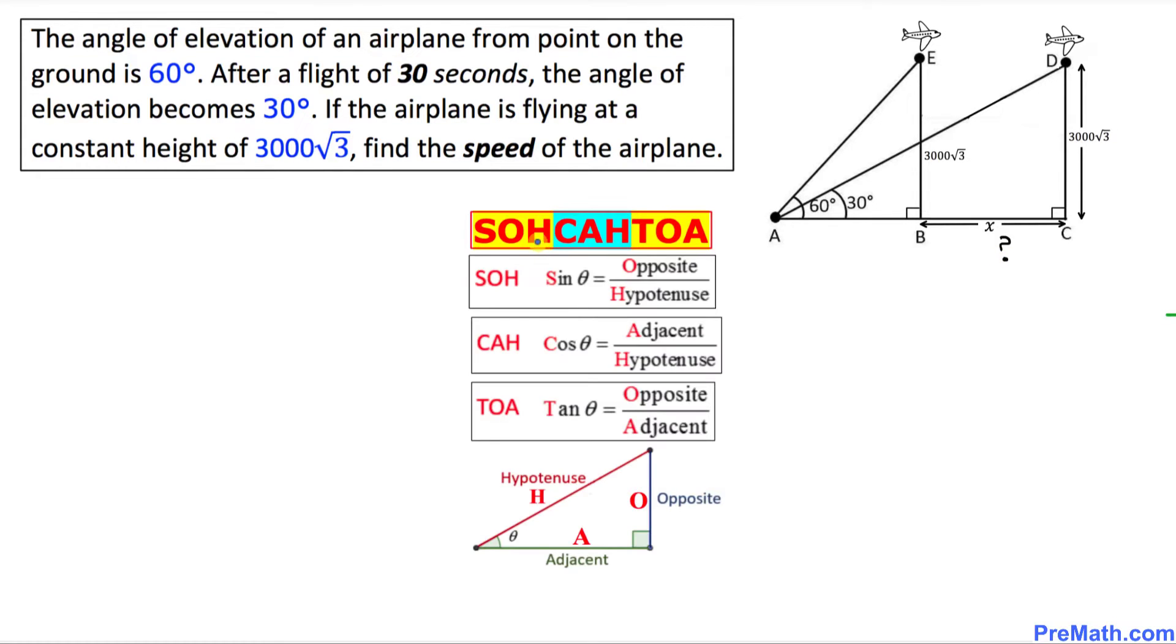Before we go any further, let's look at this SOA chart and we are only interested in TOA part. What TOA means is tangent equals to opposite over adjacent. Just keep in your mind.